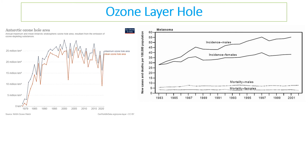The problem of this hole is clear when you look at correlating graphs: as the hole increased, so did rates of skin cancer — specifically melanomas in Australia. The skin cancer rates went up, linked directly to the hole in the ozone which was centred above the southern hemisphere and Australia.